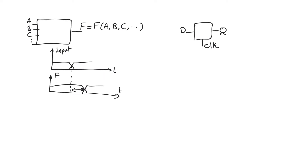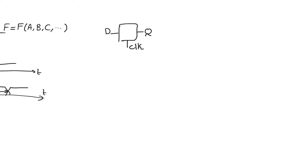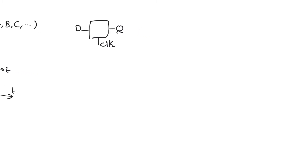Why is a sequential element called sequential? Let's look at a very common piece of code used to exchange the values in two variables or registers, A and B. We first use an intermediate variable T and put the value of A into T. Then we assign the value of B to A, and then assign the value of T to B.